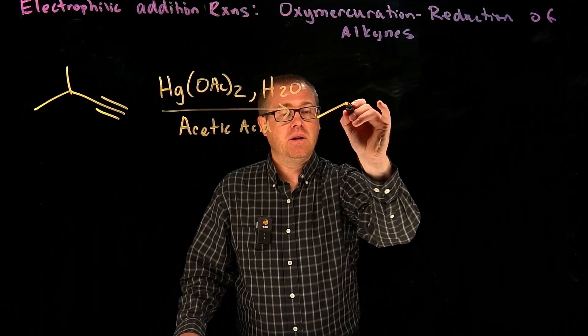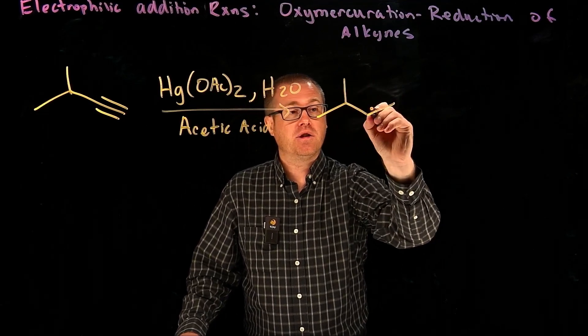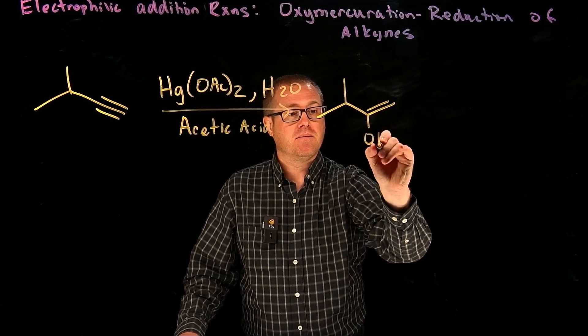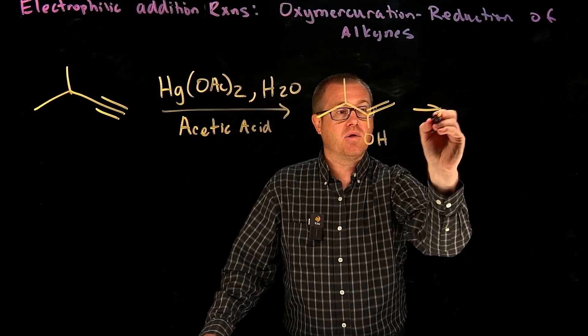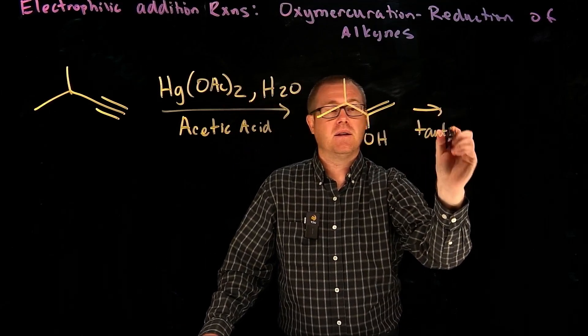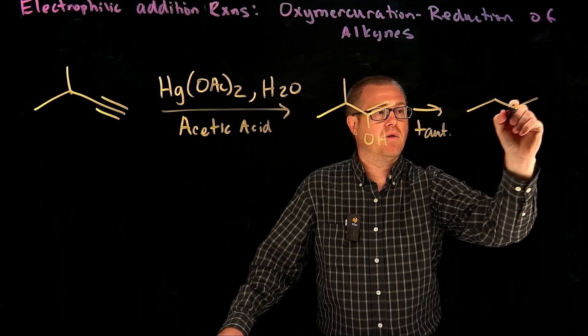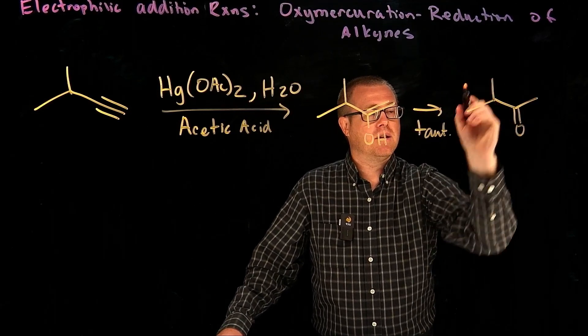And what that's going to do is first it's going to generate an enol, and then that enol is going to tautomerize into the keto form looking like that.